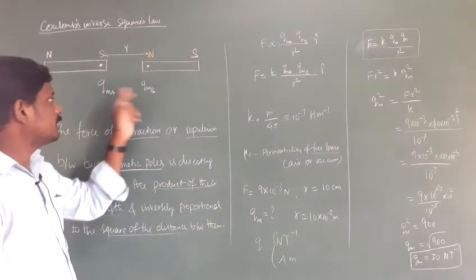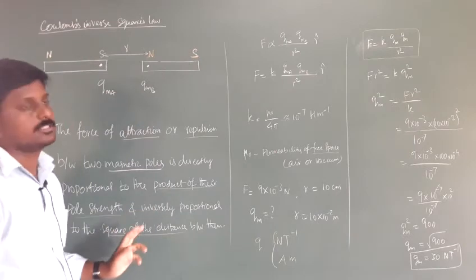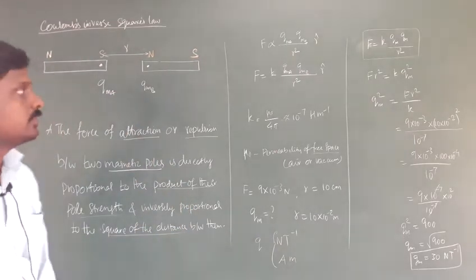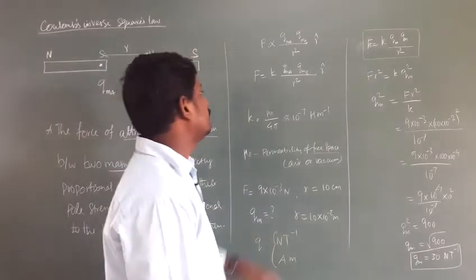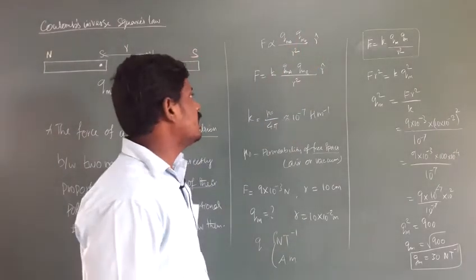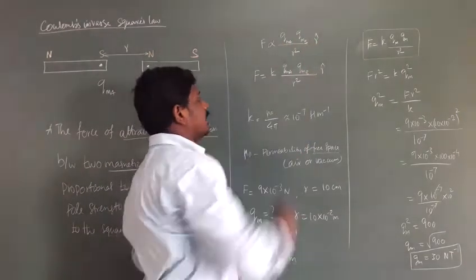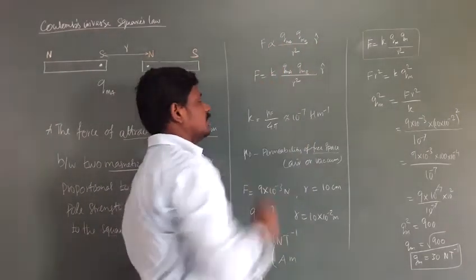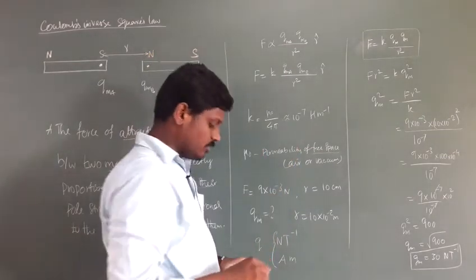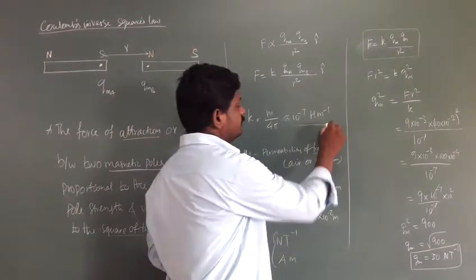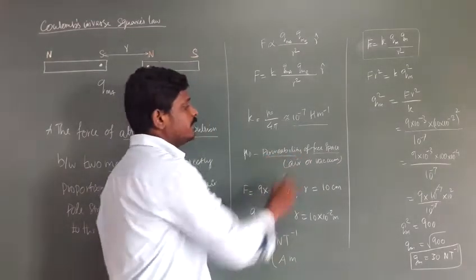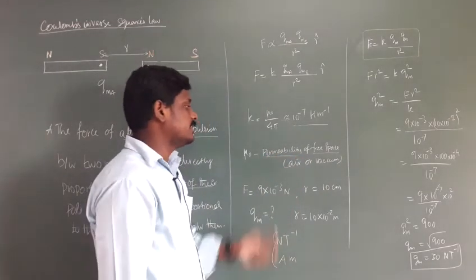The force of attraction or repulsion between two magnetic poles is directly proportional to the product of the pole strengths and inversely proportional to the square of the distance between them. In mathematical form: F is directly proportional to QMA × QMB divided by R², times R̂. Substituting the proportionality constant K, where K = μ₀/4π, which is approximately equal to 10⁻⁷ Henry per meter. Here μ₀ is the permeability of free space, that is in air.